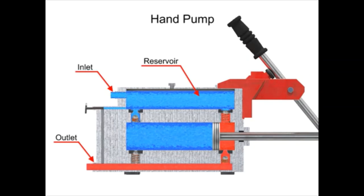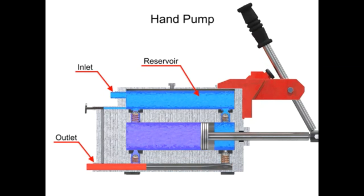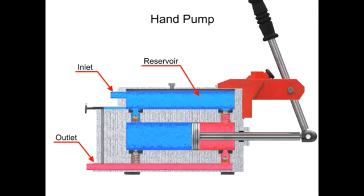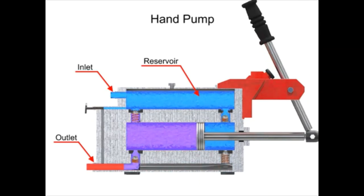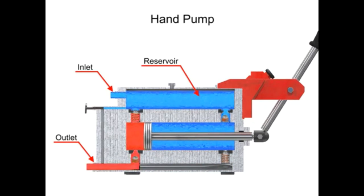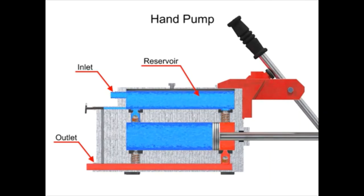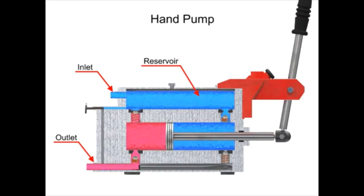Double acting hand pumps are more efficient, allowing fluid to both enter and discharge on both strokes of the piston. Moving the pump handle in either direction allows fluid to be drawn in from the reservoir and discharged via the outlet ports. Check valves in all locations prevent fluid backflow.